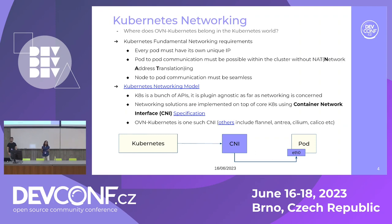Kubernetes is just a bunch of APIs — it does not really provide a networking solution by default. That is where we need portable plugins that can work with a Kubernetes cluster. Such plugins that provide networking to a Kubernetes cluster are known as CNIs, Container Network Interface. This is an upstream community that defines a set of standards for how a CNI is supposed to be written. As per those CNI specification standards, OVN Kubernetes has been written.